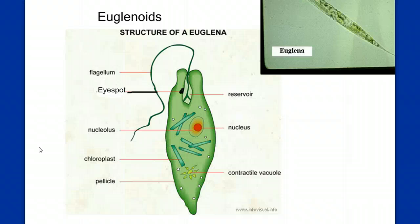This brings us to a good stopping point. We didn't get to the fungus-like protists, but that's okay. We also didn't get to the complex life cycle we're going to look at, but we'll cover that in class. This would be a good review going into the next classes. Review this, look over your notes, and be ready for a quiz next time.